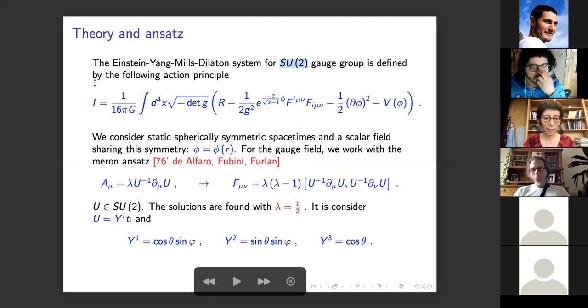Next please. Okay, we want to find asymptotically Lifshitz black holes in Einstein-Yang-Mills-dilaton theory for SU(2) gauge group defined by the first equation. For the ansatz, we consider a static, spherically symmetric spacetime and a scalar field that depends on the radial coordinate. For the gauge field, we use the meron ansatz proposed by Alfaro, Fubini, and Furlan in 1976. And this ansatz means that the gauge field is proportional to a pure gauge configuration, and you can see that this ansatz only works in the non-abelian sector of the theory; otherwise the field strength will vanish.